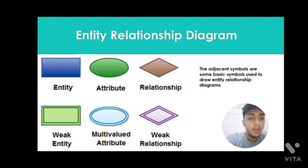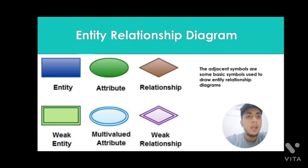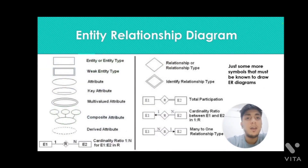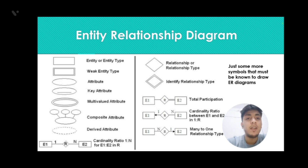An Entity Relationship model describes interrelated things of interest in a specific domain of knowledge. An ER model has an ER diagram represented by different symbols: a rectangle represents an entity type, a double rectangle represents a weak entity, an oval represents an attribute, an oval with a line represents a key attribute, a double oval represents a multi-valued attribute, and ovals connected together represent a composite attribute. A dotted oval represents a derived attribute.